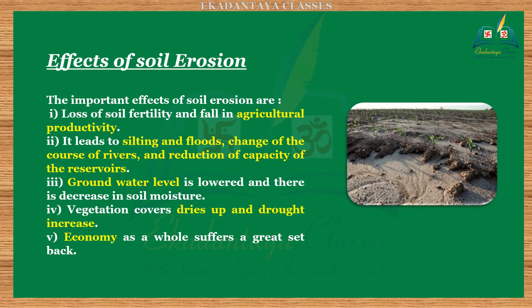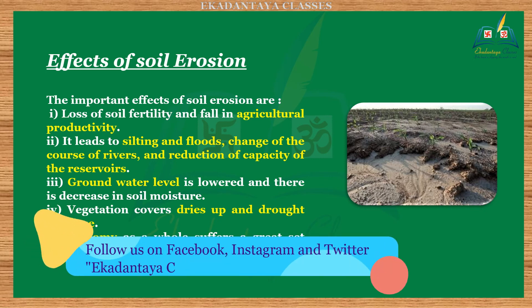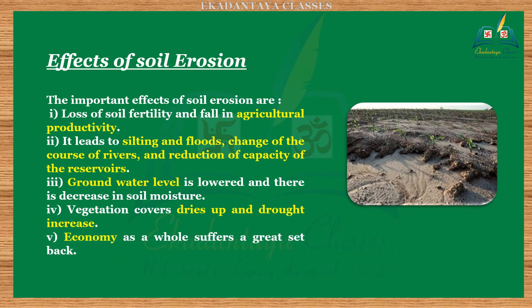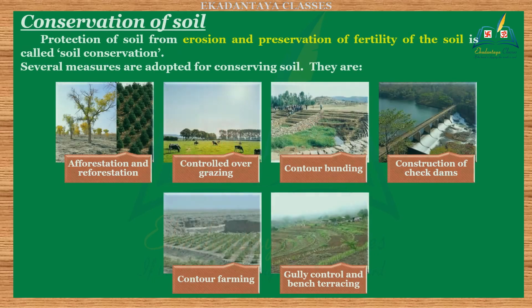Effects of soil erosion: the important effects are — one, loss of soil fertility and fall in agricultural productivity; two, it leads to silting and floods, change of the course of rivers, and reduction in the capacity of reservoirs; three, groundwater level is lowered and there is a decrease in soil moisture; four, vegetation cover dries up and drought increases; five, the economy as a whole suffers a great setback.